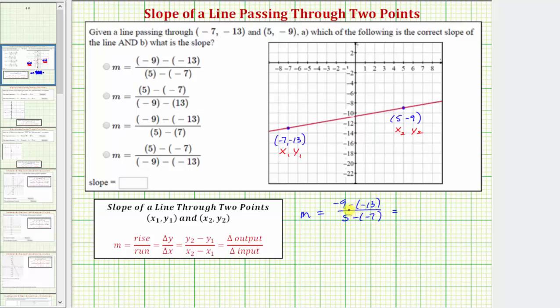Simplifying, -9 minus -13 simplifies to -9 plus 13, which is positive 4. And 5 minus -7 simplifies to 5 plus 7, which equals 12. And 4/12 simplifies to 1/3.